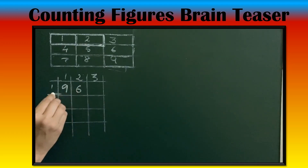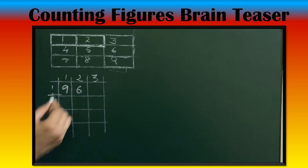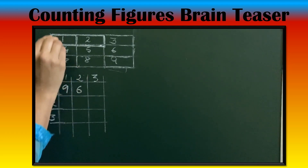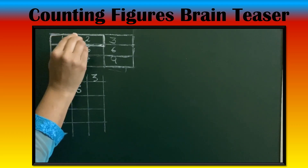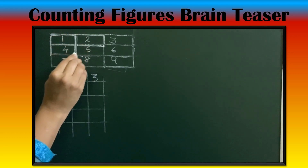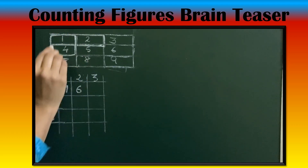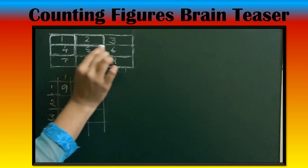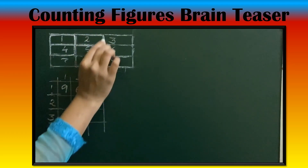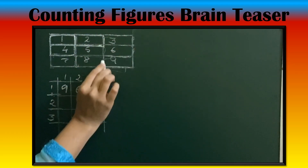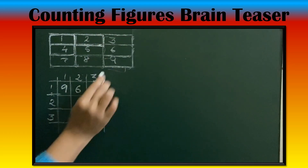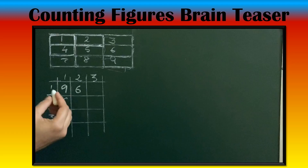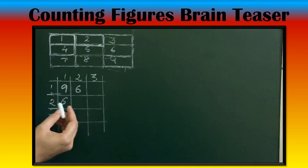Then 2 rows, 1 column — like that: 1, 2, 3, 4, 5, 6. So there are 6 rectangles of size 2 rows, 1 column.